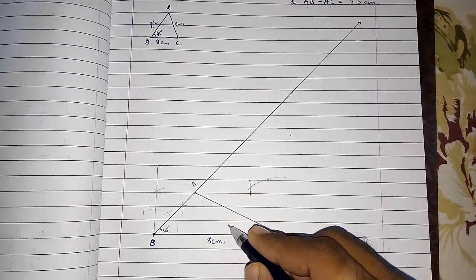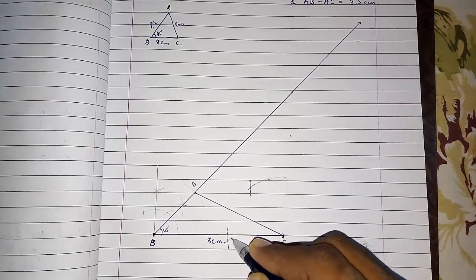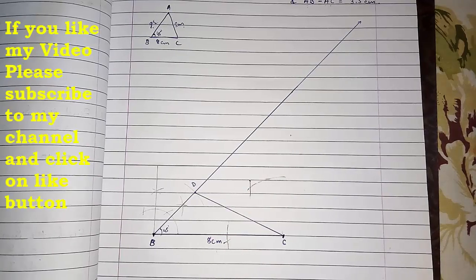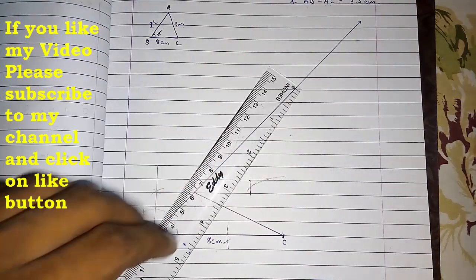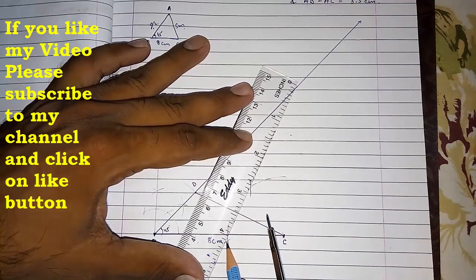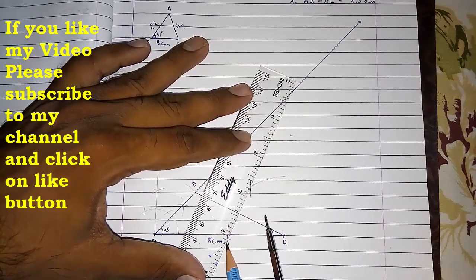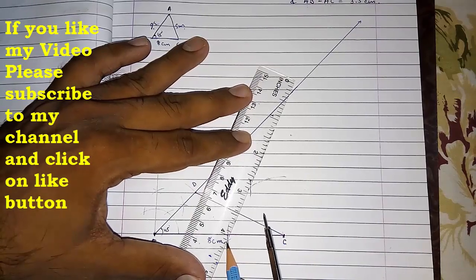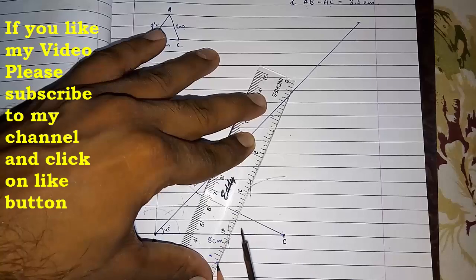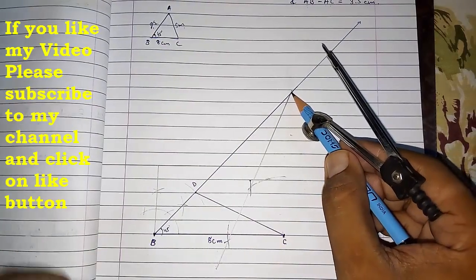I am drawing it with pen so that you can see. Here I got an arc and here also I got an arc. Now I have to join it with the help of pencil and scale.